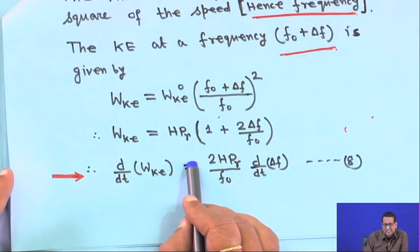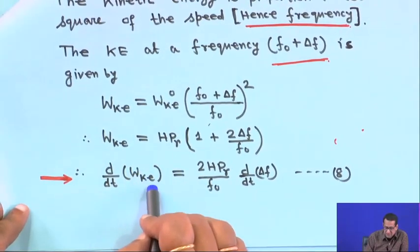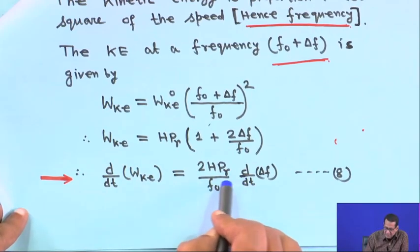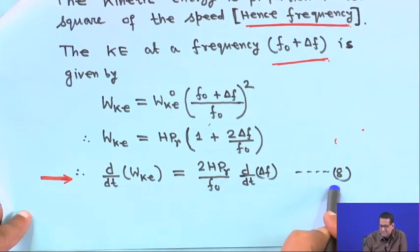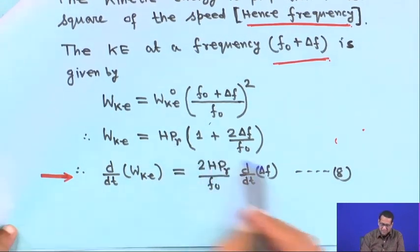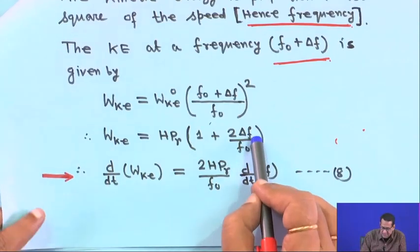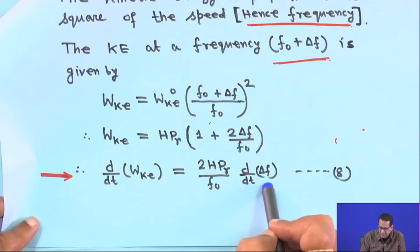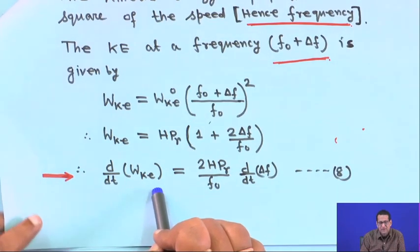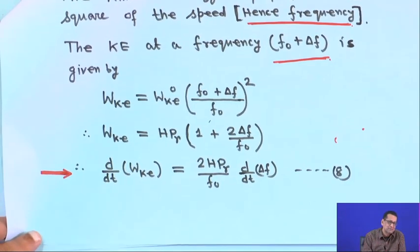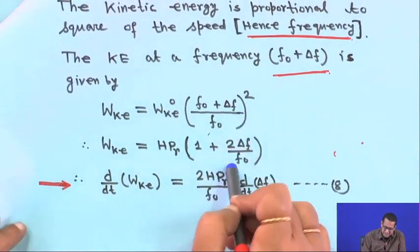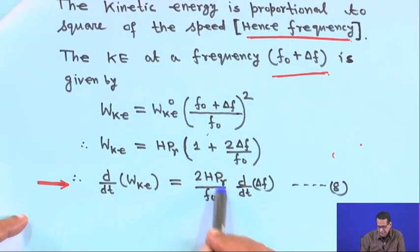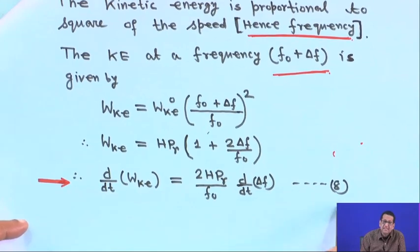Taking the derivative with respect to time gives the rate of change of kinetic energy. Since H, P_R, and F_0 are constants and only delta F varies, d/dt(W_KE) = (2·H·P_R / F_0) × d/dt(delta F). This is equation 8, which relates the rate of change of stored kinetic energy to the rate of change of frequency deviation.